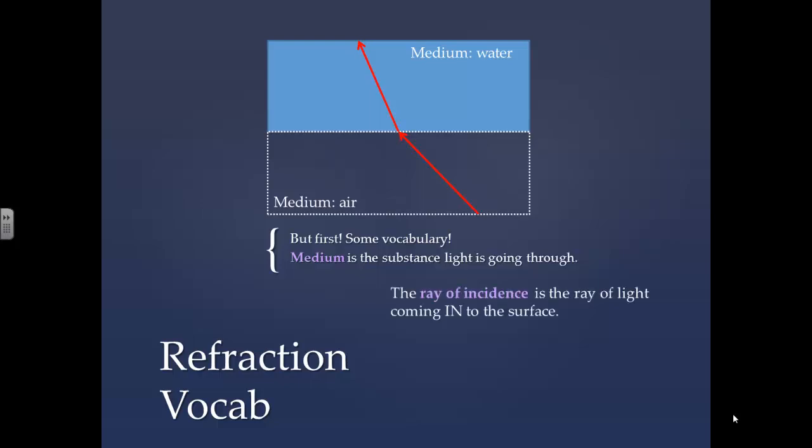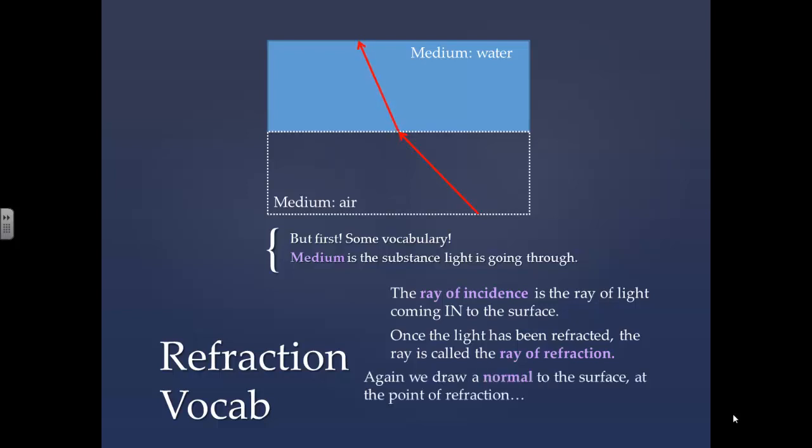The ray of incidence is the ray of light coming in to the surface. Once the light has been refracted, the ray is called the ray of refraction. Again we draw a normal to the surface, at the point of refraction.